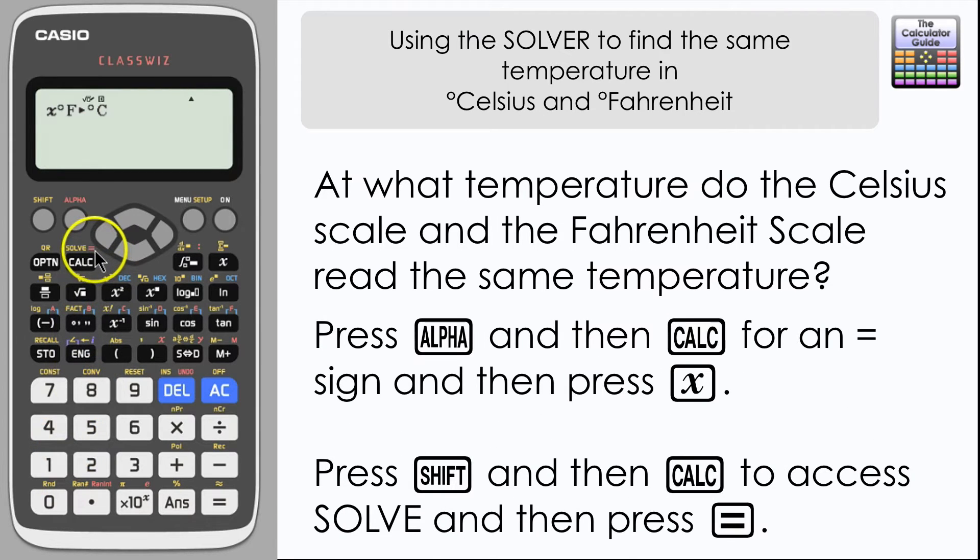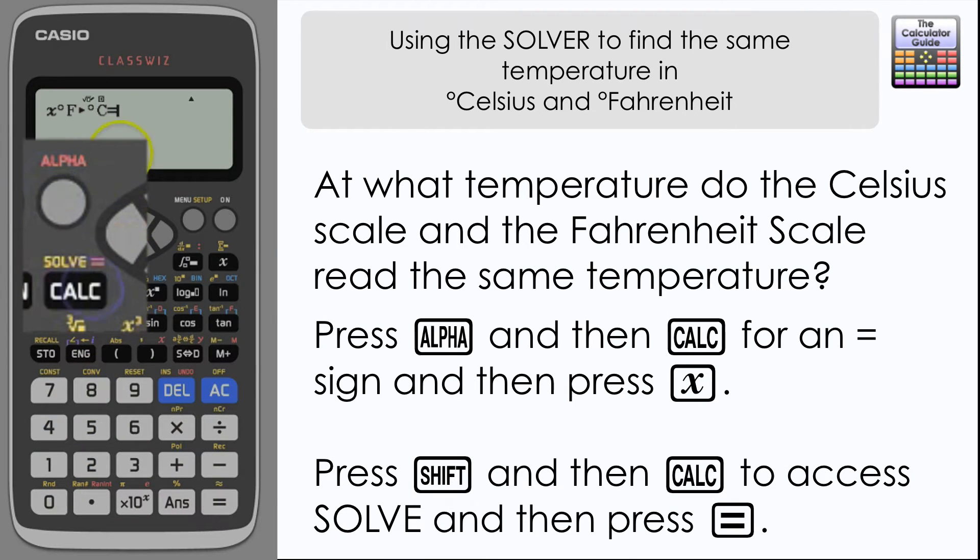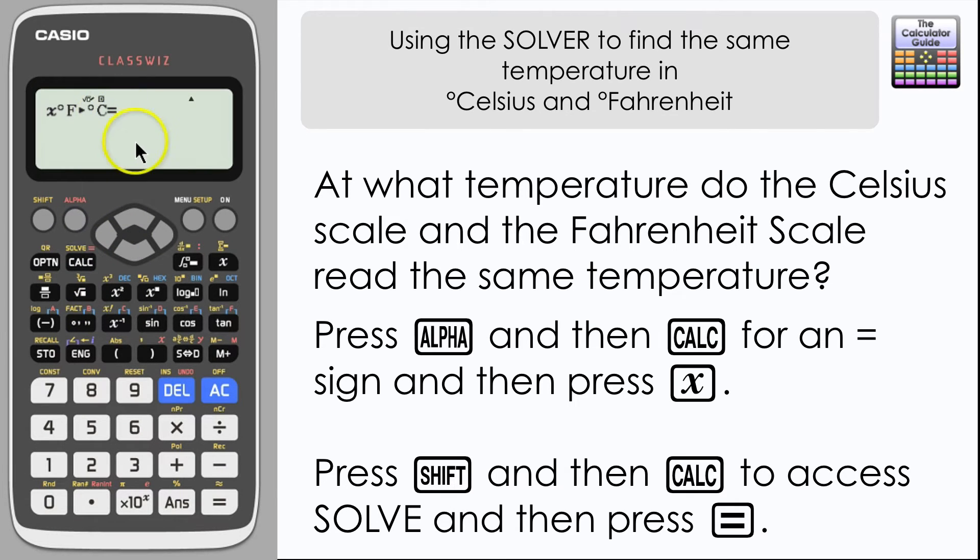Then we want to have the equals sign, so don't press equals at this stage. Press alpha and then the calc button, and that will present an equals on the screen. As our output needs to be the same as our input, so we've got the same temperature on both scales, I'm going to press X again.